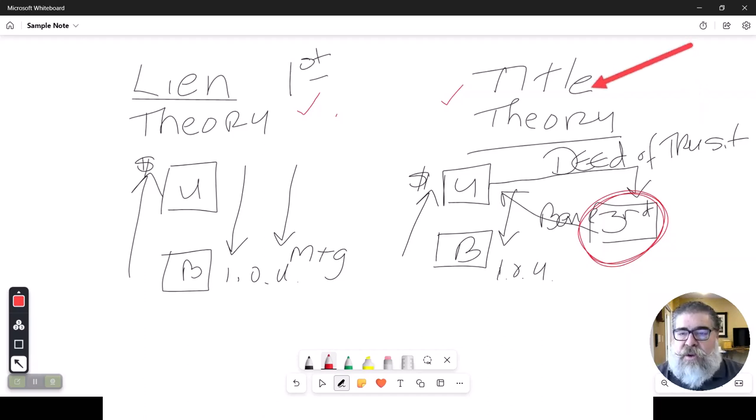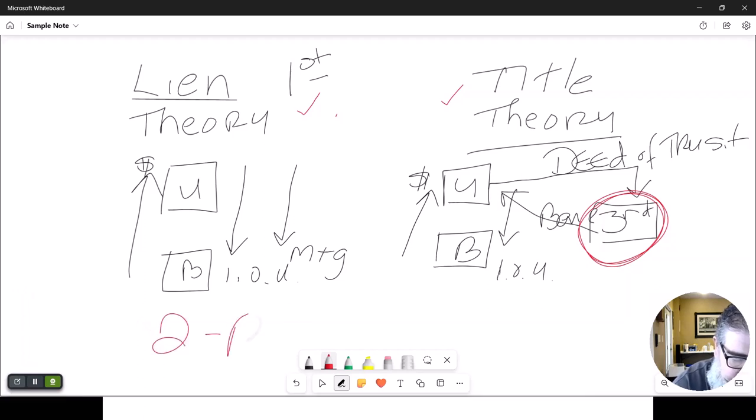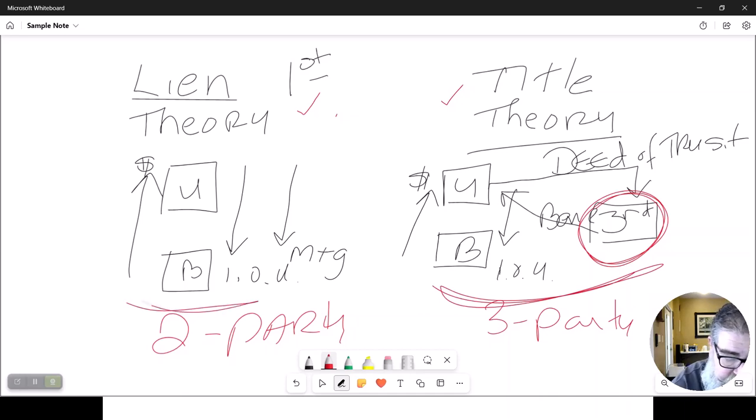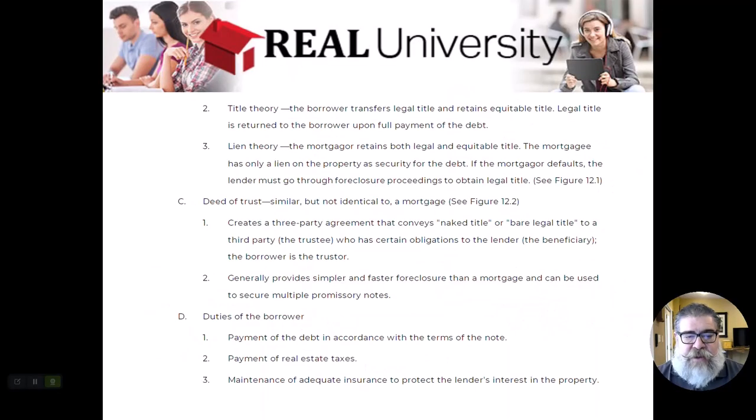Deed of trust always means title theory. Now, one other thing you may hear it called occasionally, two-party system, three-party. Because there are three people here, there's only two here. Once again, three-party system means title theory, two-party system means lien theory. So, depending on what state, and you don't get to make this decision, the seller doesn't. This is what is made by somehow long ago in some folklore, the states have determined either they are a lien theory or the title theory.